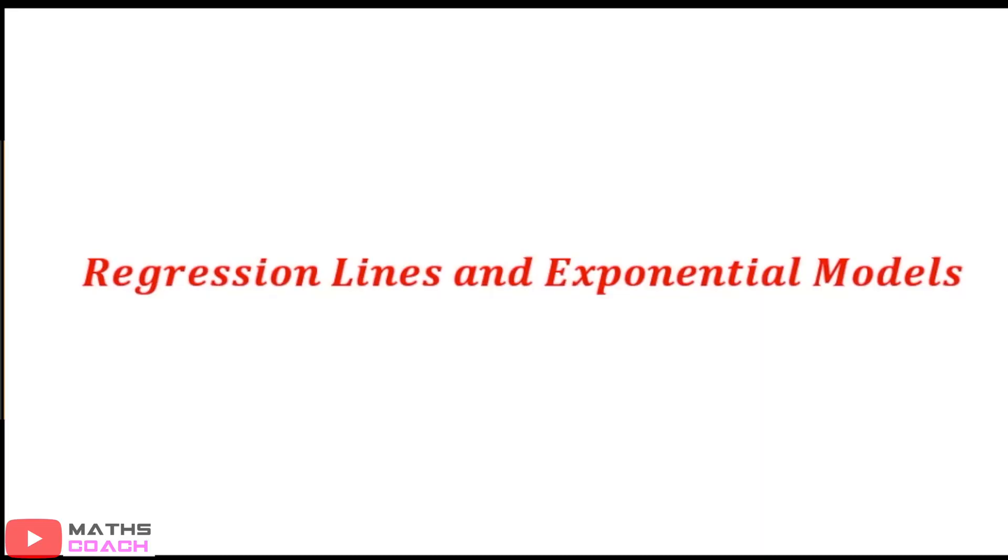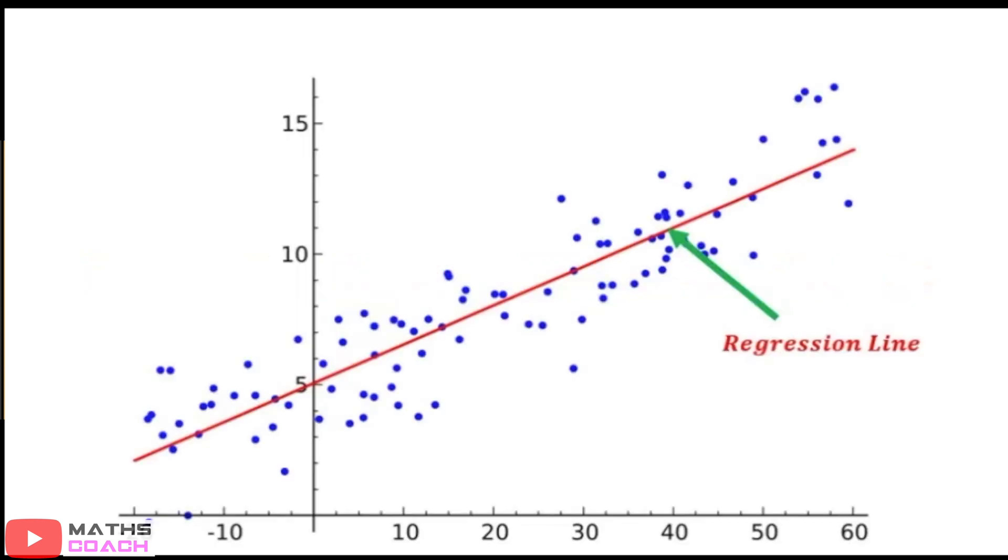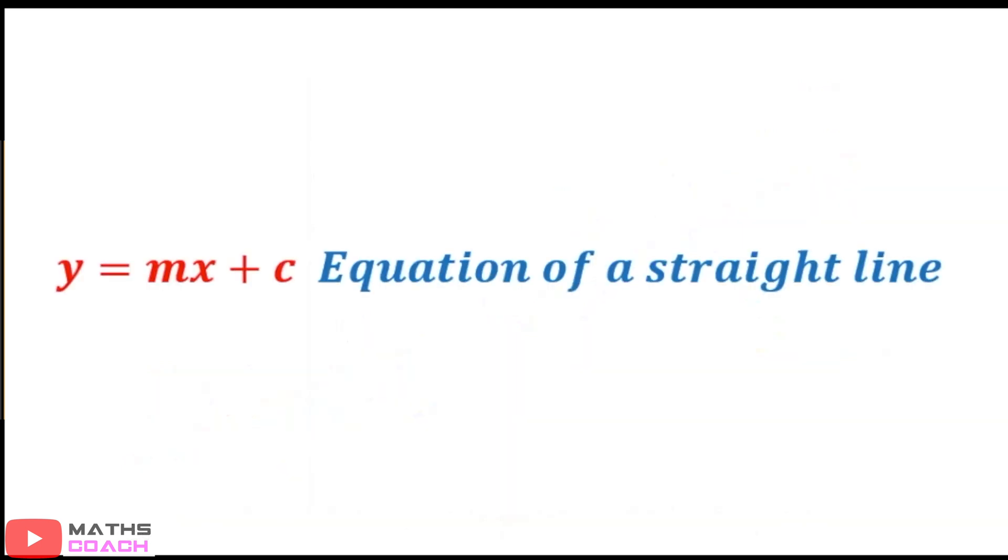So what exactly are regression lines? Well, put it simply, it's the line of best fit within a scatter graph. More precisely, it's used to model linear relationships between two variables. However, we have to use logs as a form of coding to compare with the equation of a straight line, y equals mx plus c.